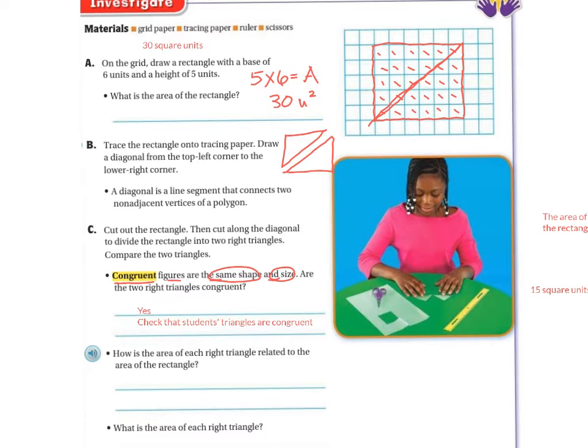So how is the area of each right triangle related to the area of the rectangle? Well, the area of each triangle is half the area of the rectangle. So if you look, I have my base times my height,